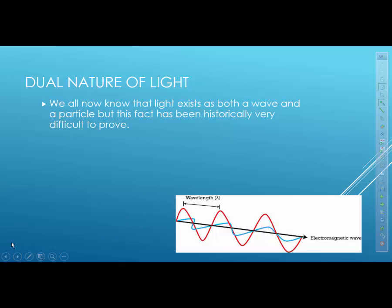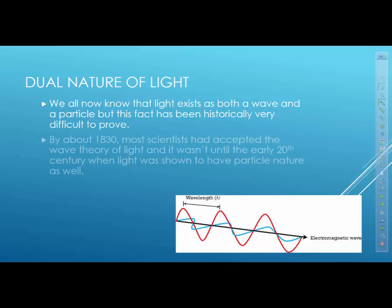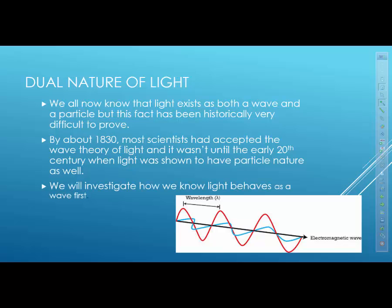Although we know that light exists both as a wave and a particle, we are going to talk about how they discovered the fact that light is a wave, and then the unit after this we talk about the particle model in modern physics. So around 1830, most scientists had accepted that the wave theory of light, and it wasn't until early 20th century when they first discovered that light had a particle nature.